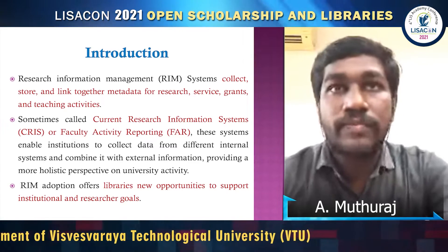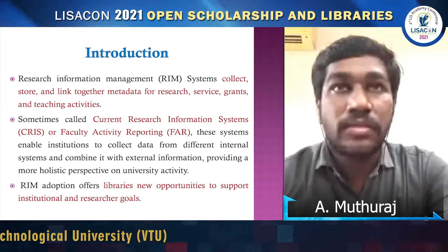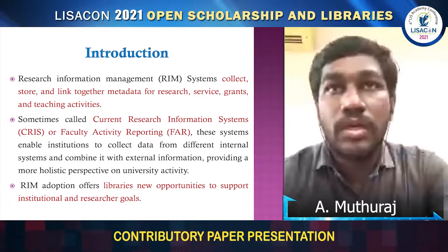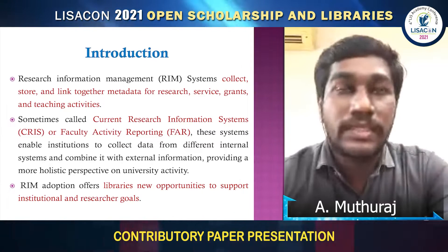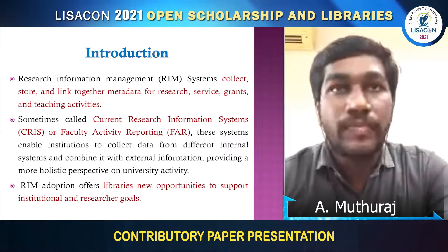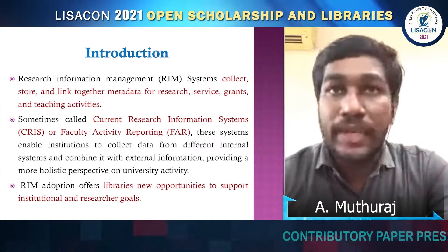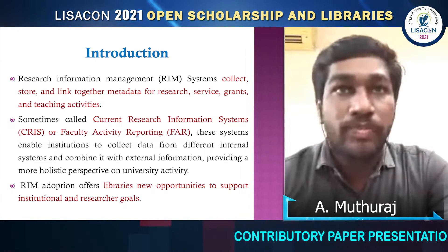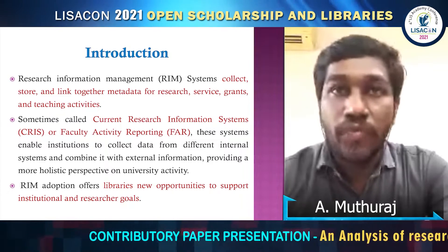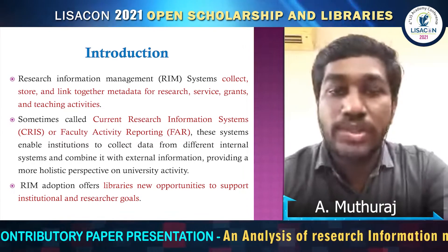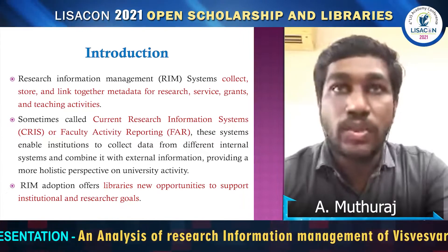Introduction. A Research Information Management System collects, stores, and links together metadata for research, service, grants, and teaching activities — sometimes called a Current Research Information System or Faculty Activity Report. The Research Information Management adoption offers libraries new opportunities to support institutional and research goals.